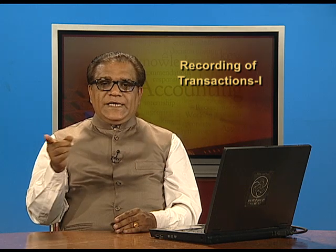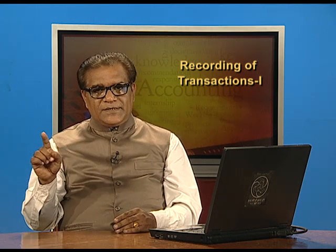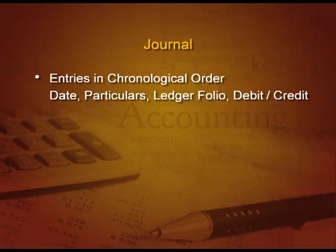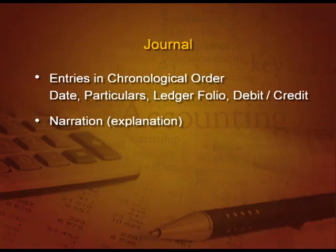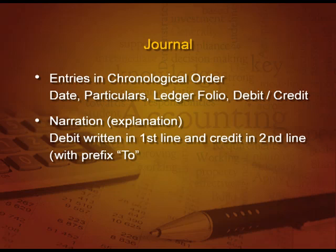Then there are two more columns: debit and credit. Either we write in debit or in credit. If something is written in debit, nothing will be written in credit, and if something is written in credit, nothing will be written in debit. There is also a very important part — narration — which is given along with each entry and explains what is actually there in the transaction. The debit is written in the first line and credit is written in the second line with the prefix 'To'.